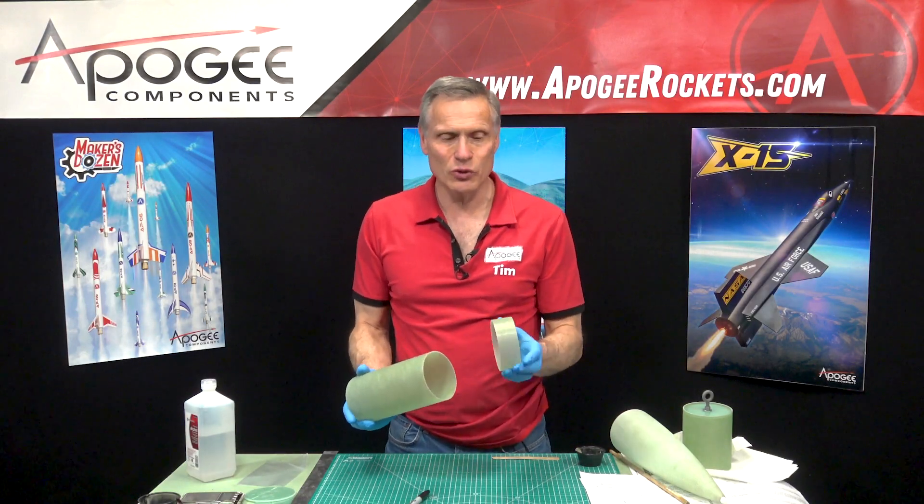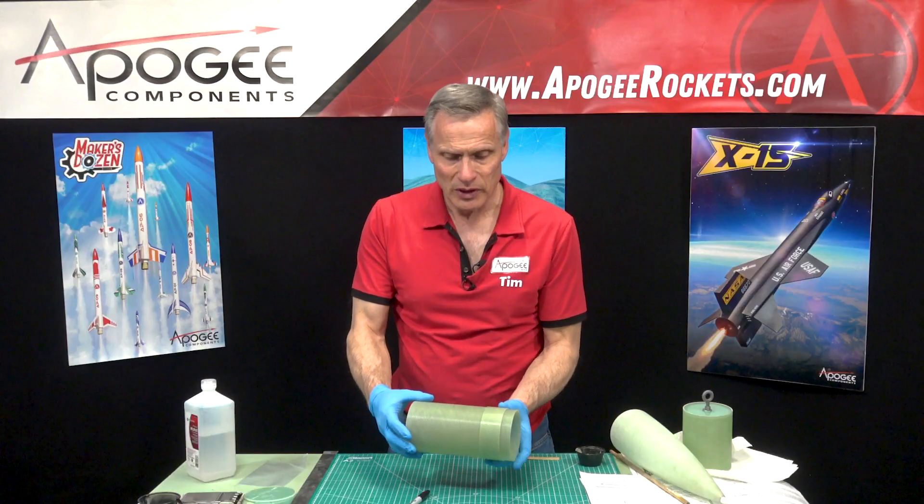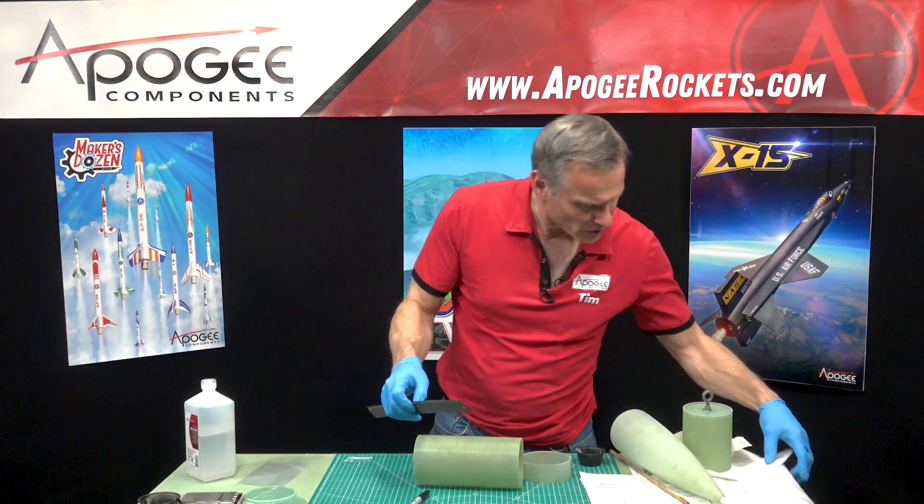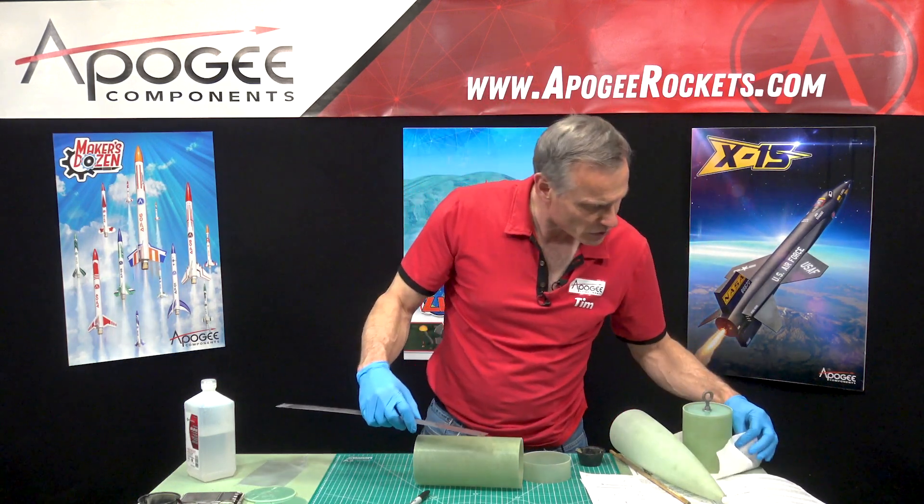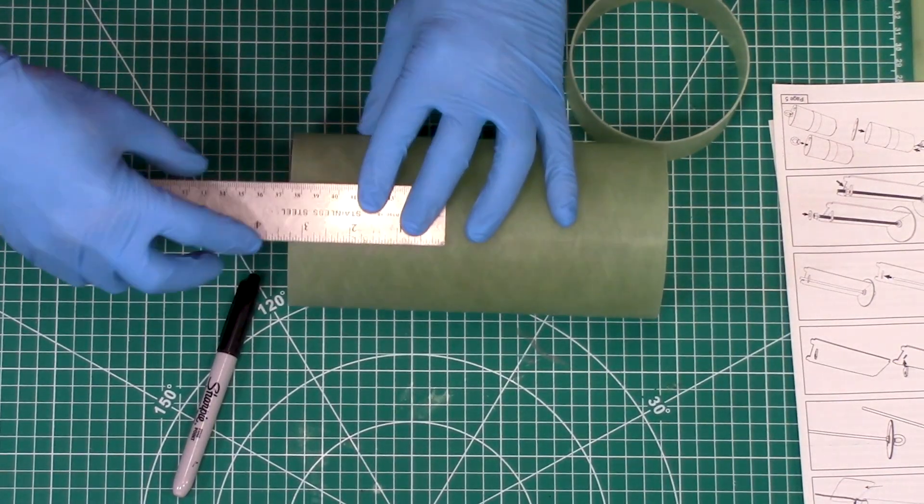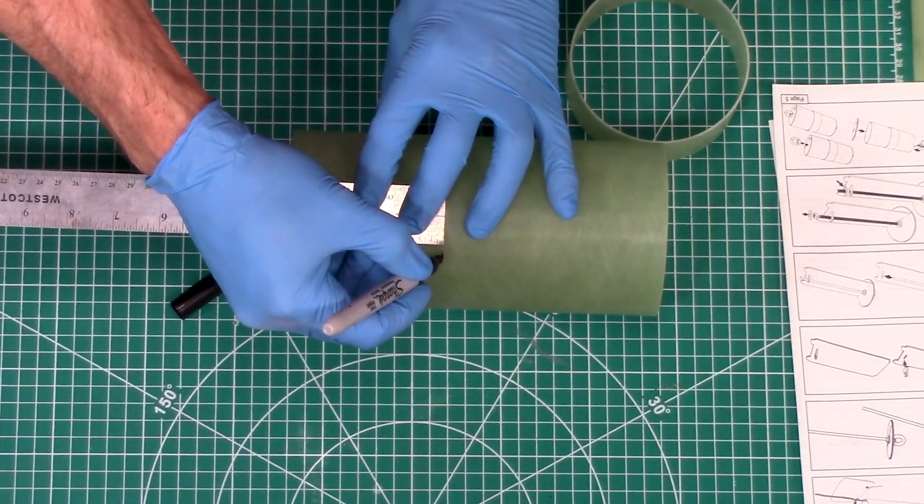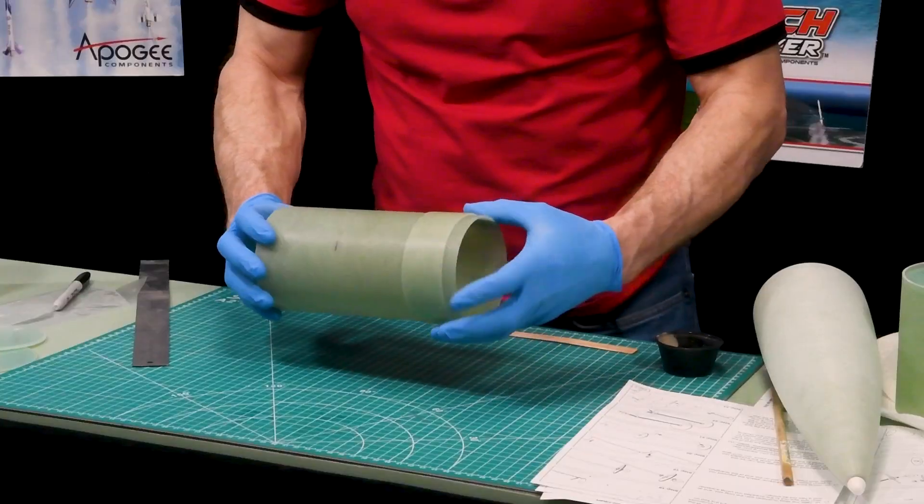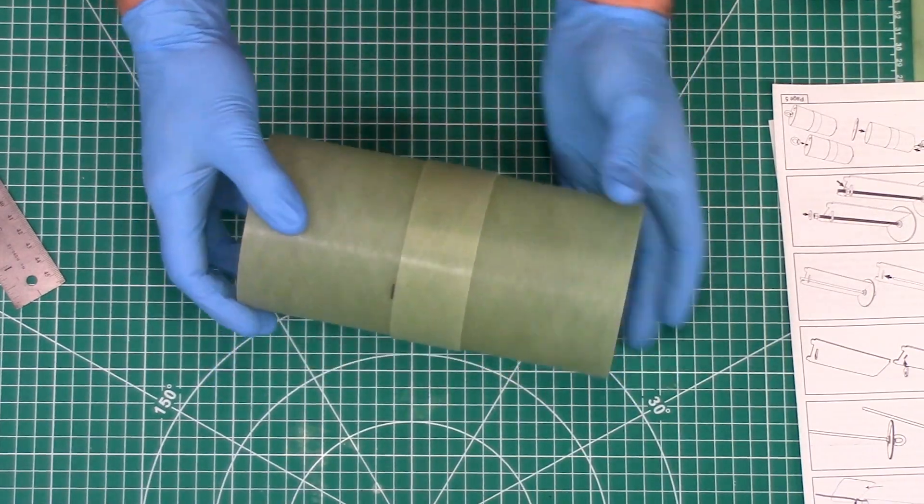My next step is to put the switch band onto the eBay tube. This has to be measured - it's step 17 in the instructions - three and one quarter inches from one end. I'll make a mark here at three and one quarter inches, and when we put the switch band on, that should center it up so there's an equal amount of shoulder on each side.